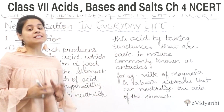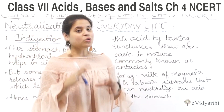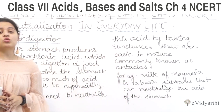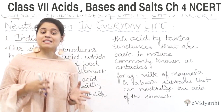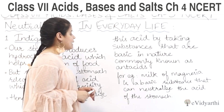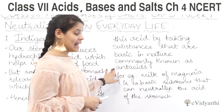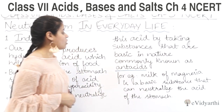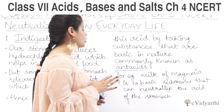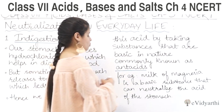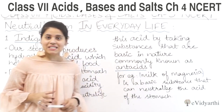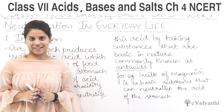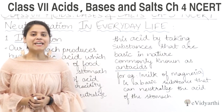In that case, we need to neutralize this excess acid by taking substances that are basic in nature, commonly known as antacids. For example, milk of magnesia is a basic substance that can neutralize the acid in the stomach. So this is the first example.